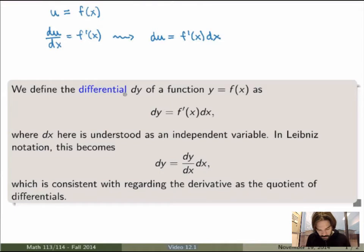So we defined the differential dy of a function y equals f(x) as being exactly the expression above. So dy is equal to f prime dx, but here I'm treating dx as an independent variable, so dy, the differential, really is a function of two variables, x and dx.